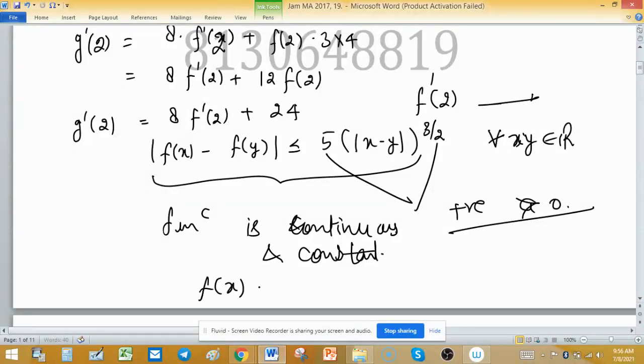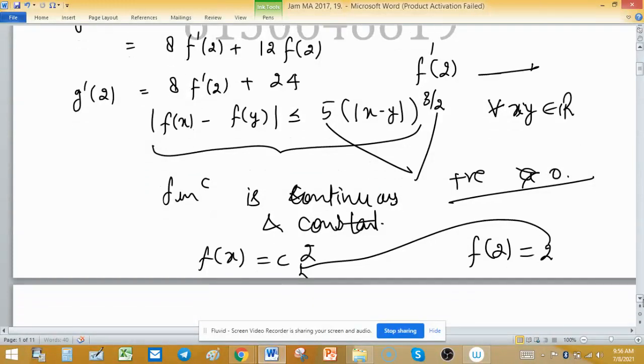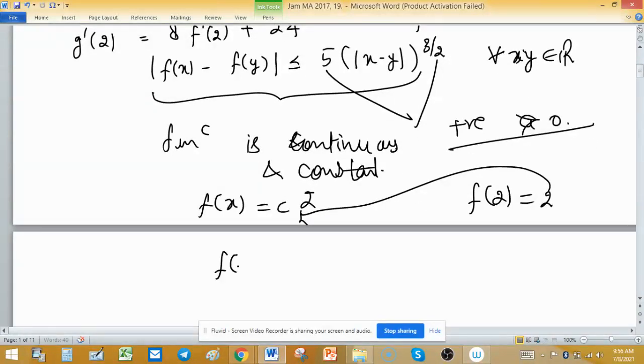It means that f(x) = c. But as given condition f(2) = 2, it means that this value of c is 2 because it's a constant function. So what we have is f(x) = 2.